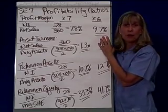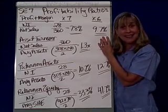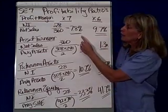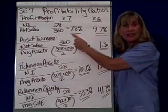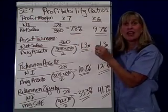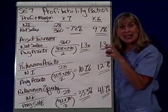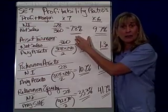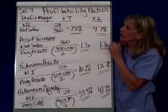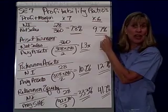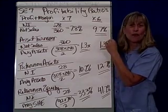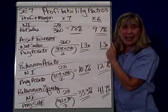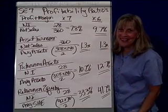Another way to talk about the profit margin is how many cents on the dollar show up on your bottom line. So for X7, instead of saying 7.8%, you could say 7.8 cents of every dollar sold is profit. Or in the previous year, 9.7 cents for every dollar sold was profit. Is this good or bad? It depends, doesn't it?